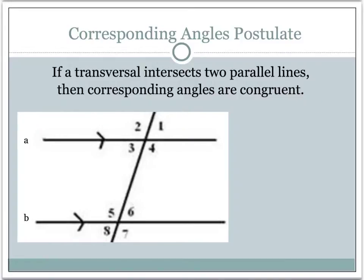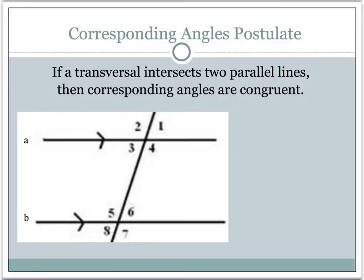The corresponding angles in this picture are: angle two corresponds with angle five, angle three and angle eight are corresponding, angle one and angle six are corresponding, and angle four and angle seven are corresponding — because they are in similar positions relative to the transversal and the two lines. Line A and B are parallel because of those two symbols, so we know the transversal is intersecting two parallel lines. Since that is true, all pairs of corresponding angles are congruent.